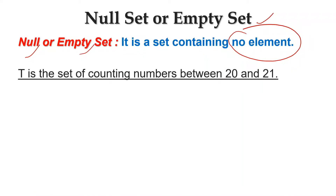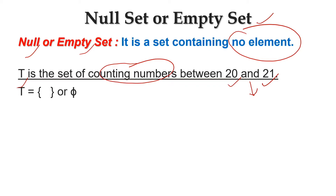Let's see some examples of null set. Here we have T, which is the set of counting numbers between 20 and 21. You can see that there is no counting number between 20 and 21, which means T has no element. So you can write T as an empty curly bracket, or using the symbol φ. So T equals φ — that means T is a null set.